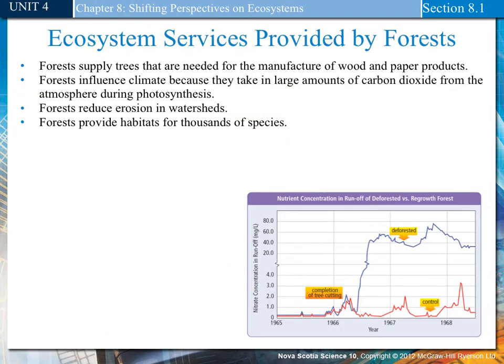Ecosystem services provided by forests: Forests supply trees needed for the manufacture of wood and paper products. Forests influence climate because they take in large amounts of carbon dioxide from the atmosphere during photosynthesis. Forests reduce erosion in watersheds and provide habitat for thousands of species. A watershed is an area of land over which runoff drains into a body of water. The graph shows the difference between a forested and deforested area in filtering nitrates from runoff.